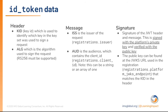What is in an ID token? The ID token is split into three parts: the header, the message body, and the signature. The header contains the key ID (kid). When the platform signs the ID token, it signs it with its private key and puts the key ID of the corresponding public key in the header. When the tool receives the message and wants to validate it, it looks at the key ID, goes to the platform's JWKS URL to find the matching public key, and uses that public key to validate the signature. The signature signs the rest of the message — it is signed with the platform's private key and verified with the platform's public key.